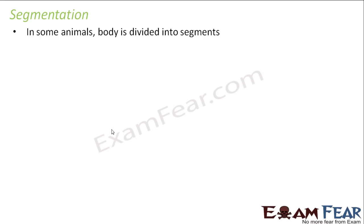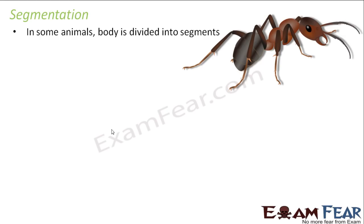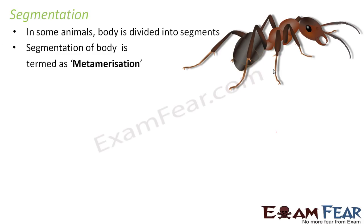This segmentation is not present in all animals; it is present only in certain animals. For example, arthropods — the subject shown falls under the arthropod phyla, and here the segments help in locomotion, feeding, and also act as sensory perceptions. This segmentation of the body is known as metamorization — this phenomenon is given the name metamorization.